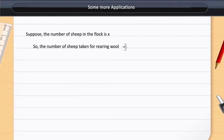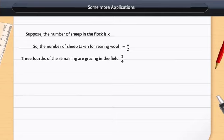Now, three-fourths of the remaining are grazing in the field, that is, 3 by 4 multiplied by the remaining number of sheep, which is equal to 3 by 4 multiplied by X minus X by 2, or just 3X by 8.